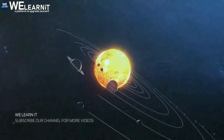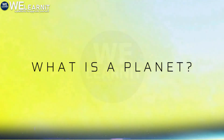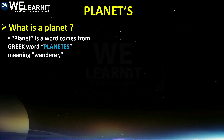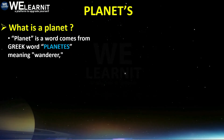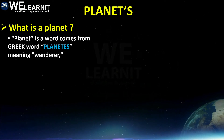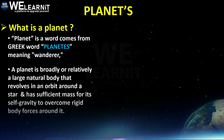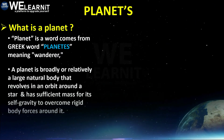Friends, do you know what exactly a planet is? The word planet comes from the Greek word 'planetes', meaning wanderer. A planet is a broadly or relatively large natural body that revolves in an orbit around a star and has sufficient mass for its self-gravity to overcome rigid body forces around it.